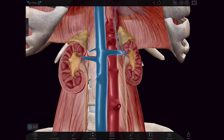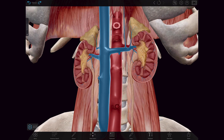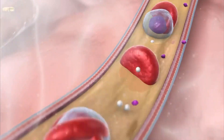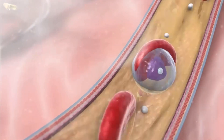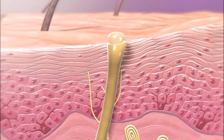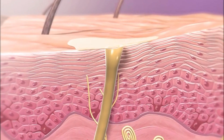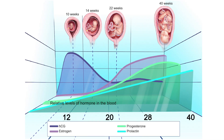ADH acts on the kidneys, blood vessels, and sweat glands in the skin to reduce water loss throughout the body. OXT factors into pregnancy and nurturing.